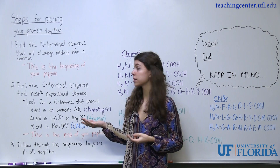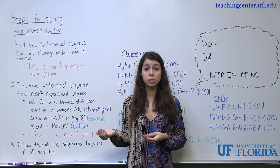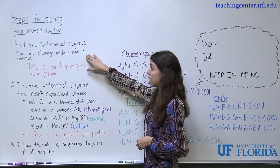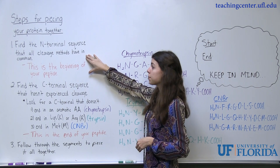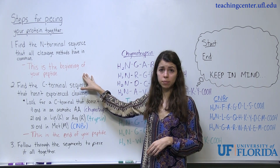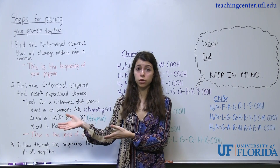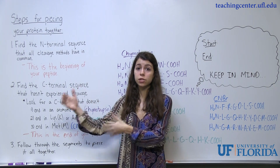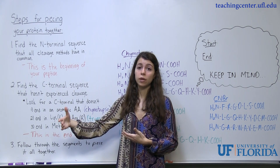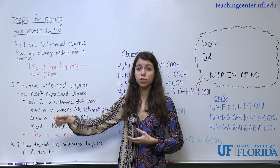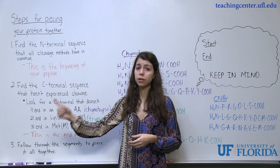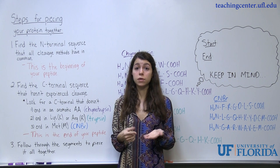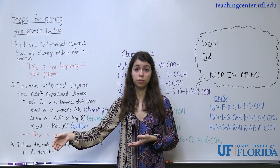I put together a list of general steps for how to piece together your protein. First, you're going to find the N-terminal sequence that all cleavage methods have in common — this is going to be the beginning of your peptide. Every peptide starts with an amino terminal sequence and ends in a carboxy terminal sequence. Since there's nothing before the start of your protein, you can't cleave before it, so the sequence they all have in common from the N-terminus is going to be the start of your protein.